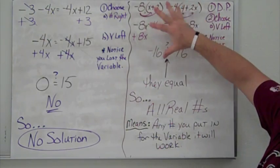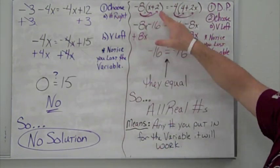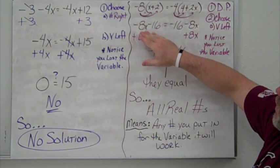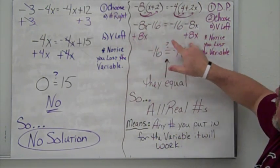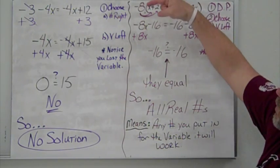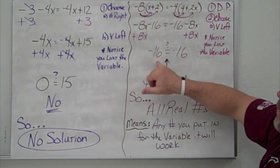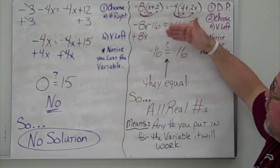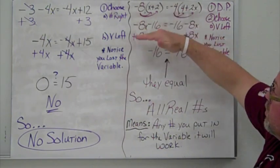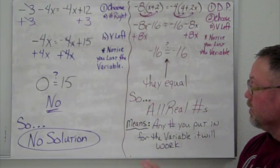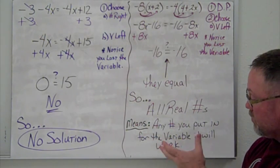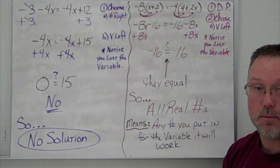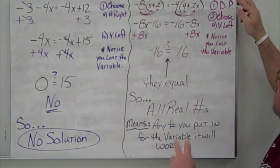Looking at a slightly larger problem: first we use the distributive property to distribute our numbers into the parentheses and get our terms. We then move the variable to the left — and again, we lose the variable. We're left with negative 16 equaling negative 16. They do equal, so when you lose the variable and both sides match, it's an all real numbers solution — any number substituted for the variable will work.